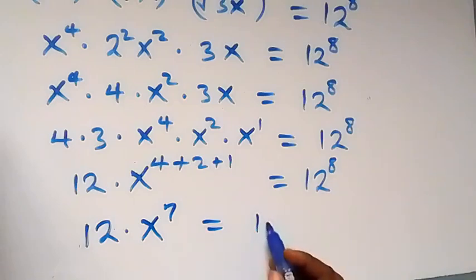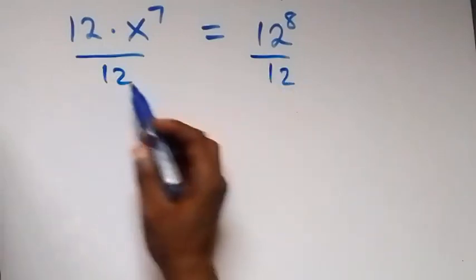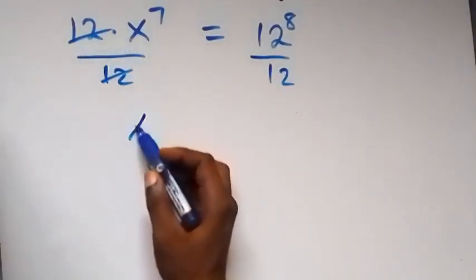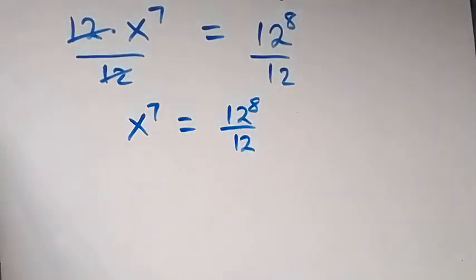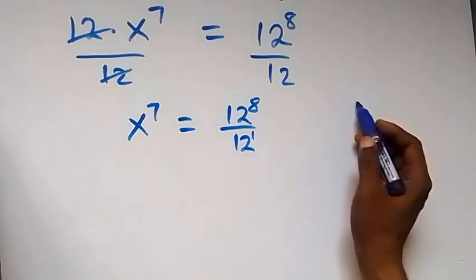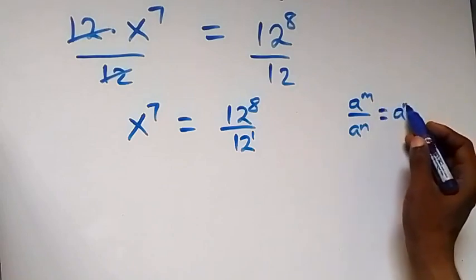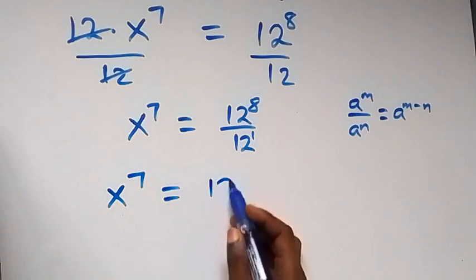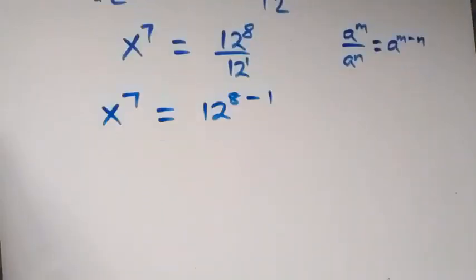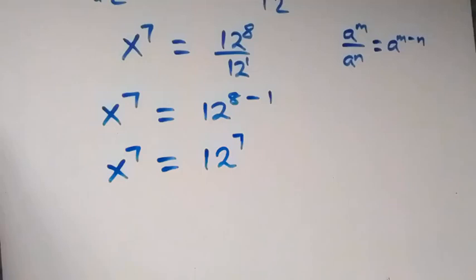Now equals 12 raised to power 8. Then from here we divide both sides by 12, and this 12 cancels, so we have x raised to power 7 equals 12 raised to power 8 over 12. Using the law a^m / a^n = a^(m−n), we have x raised to power 7 equals 12 raised to power 8 minus 1, which gives x raised to power 7 equals 12 raised to power 7.